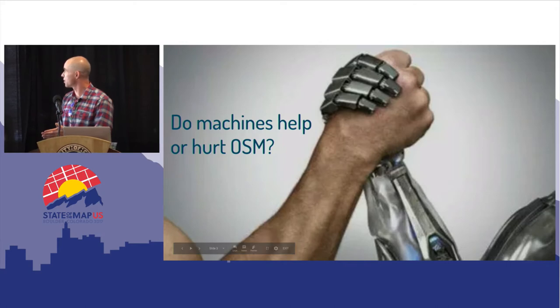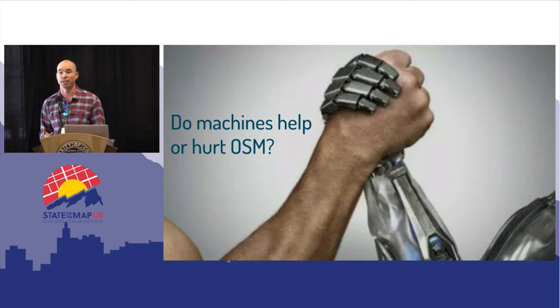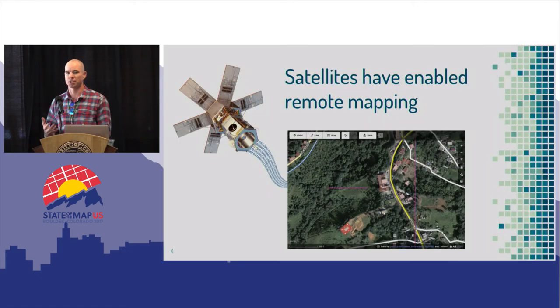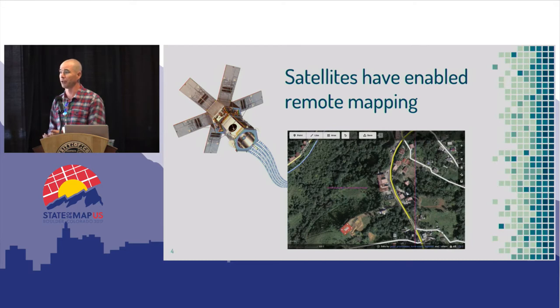This question of what's the right balance between machines and humans when it comes to OpenStreetMap specifically — in the past we've had questions about satellites in the skies or machines. There were a lot of questions when we first started remote mapping and tracing satellite imagery about whether that was going to be a good or bad thing for the community. And it ended up being a really good thing, but we had to find the right balance of pulling those things together.